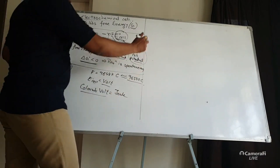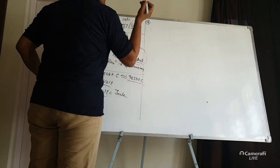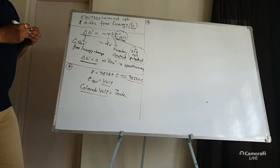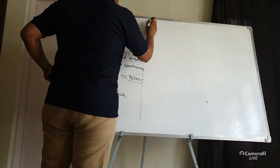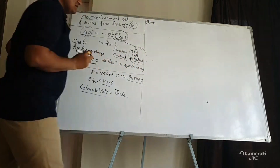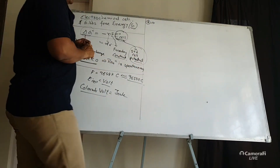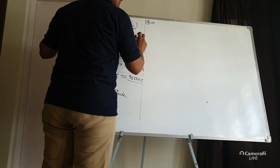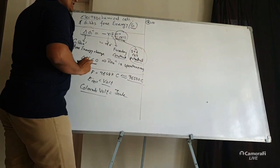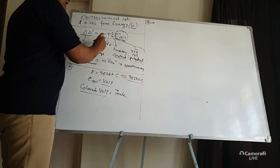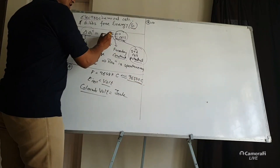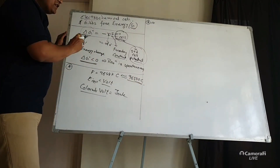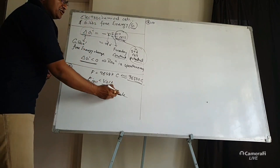If you are given E⁰cell, we can calculate ΔG⁰ in Joule units. If E⁰cell is involved with F = 96500 Coulombs and N number of moles of electrons, then the value of ΔG⁰ will be in Joules.